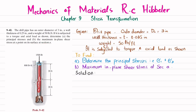You can see this drill pipe is subjected to axial load as well as torque, and we have to find the principal stresses and maximum in-plane shear stress at section AA. This pipe has a weight of 50 pounds per feet acting downward. If we cut the pipe at section AA and draw the free body diagram, this is the pipe at the length where we have cut it.